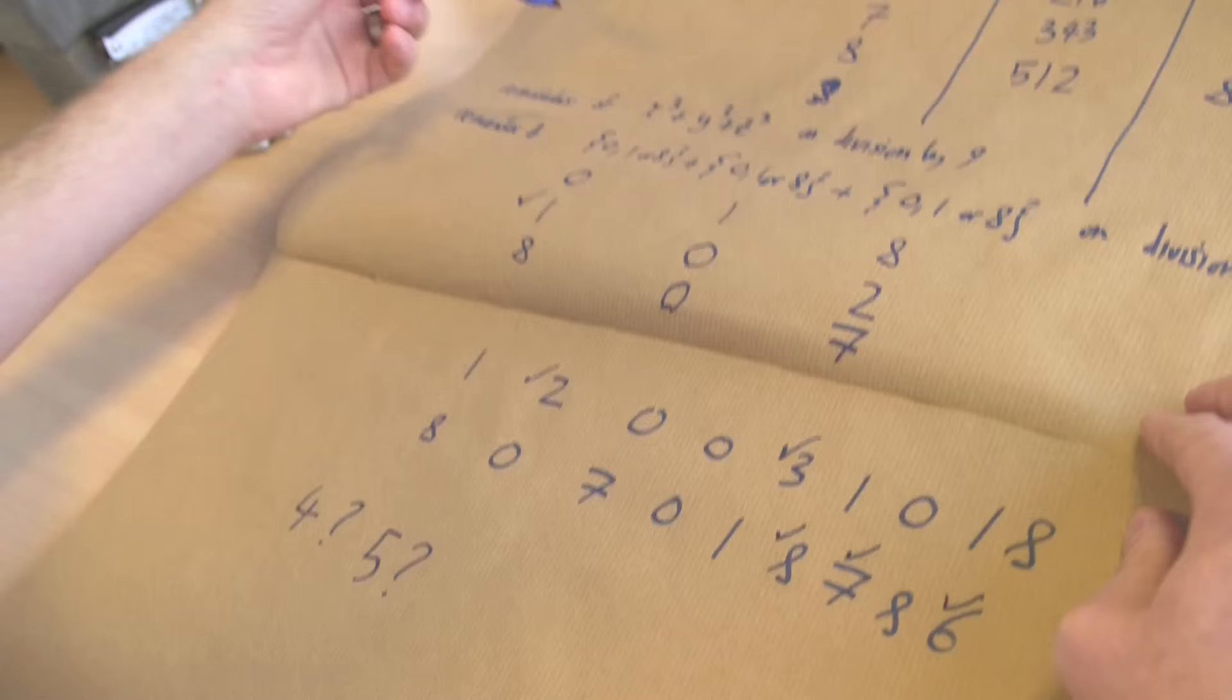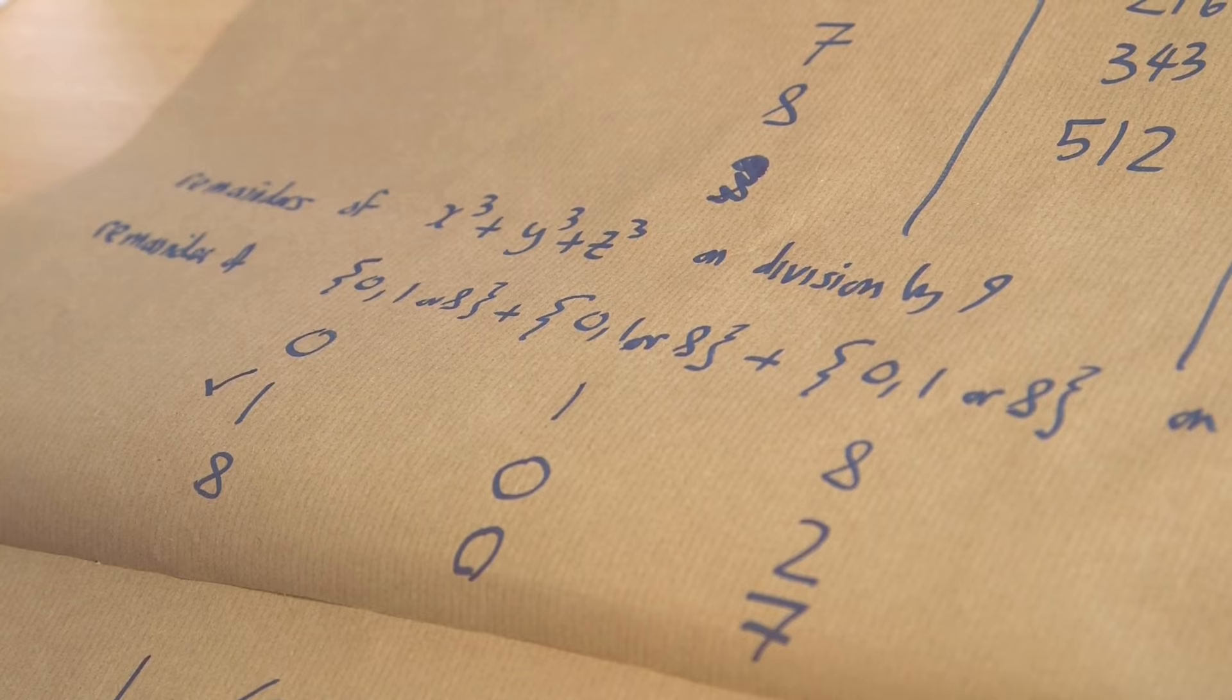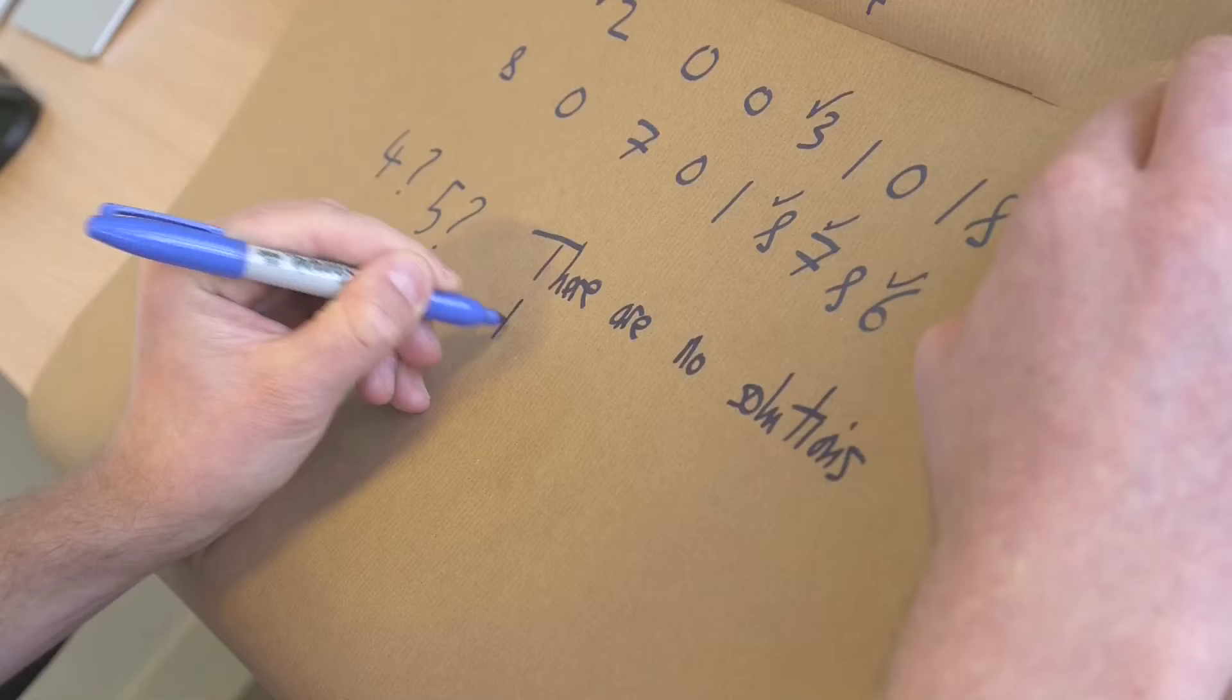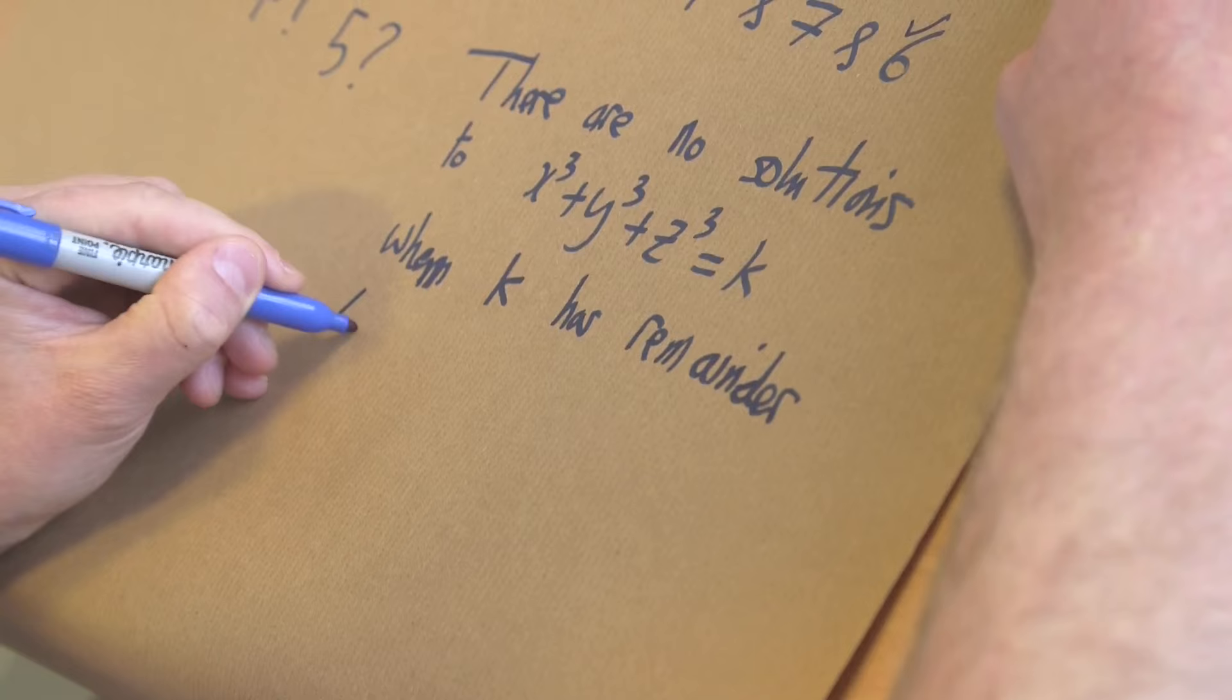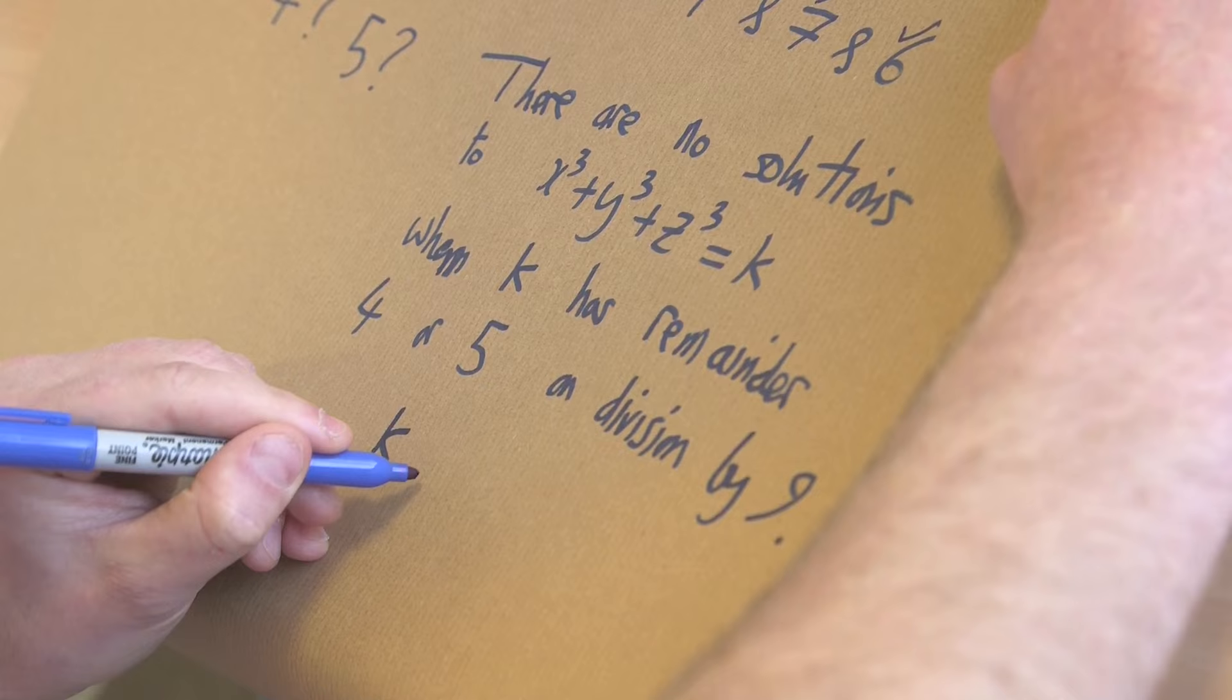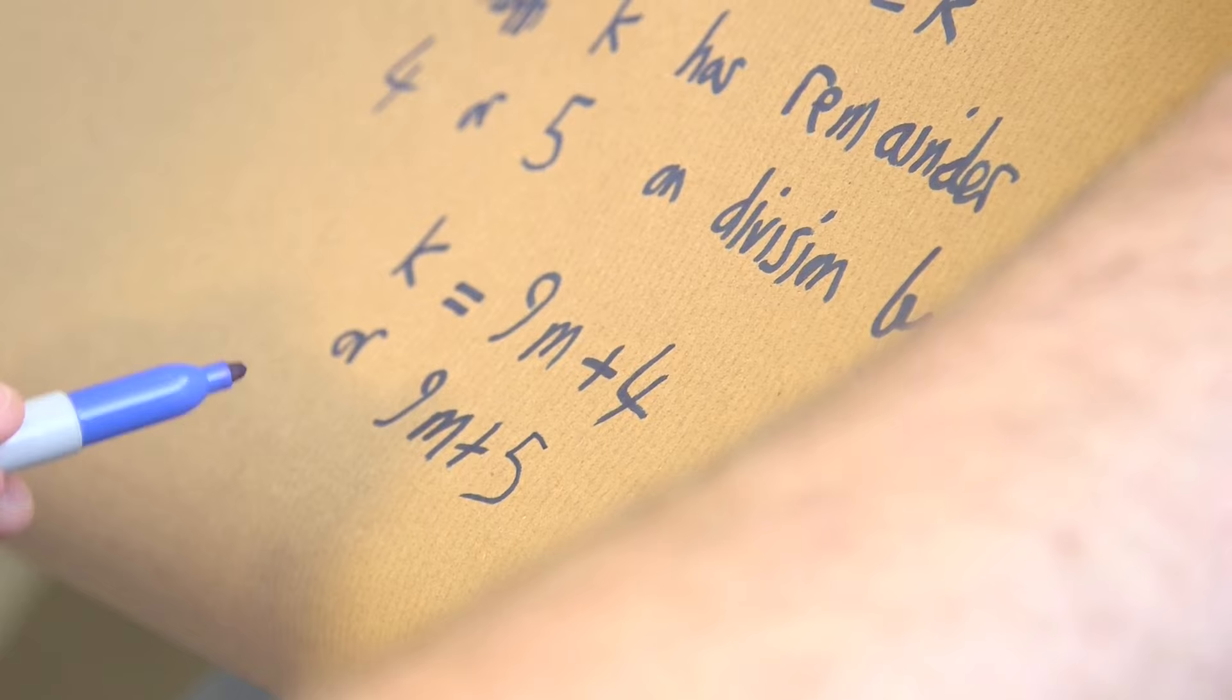So this is telling you that if you take any numbers and sum the cubes of them and think about the remainder on division by 9, you're never going to end up with a number whose remainder on division by 9 is 4 or 5. The conclusion is that there are no solutions to the equation x cubed plus y cubed plus z cubed equals k when k has remainder 4 or 5 on division by 9. So remember I wrote before we weren't allowed integers k which were of the shape 9m plus 4 or 9m plus 5. Those were the integers which definitely didn't have solutions, and this is the reason.